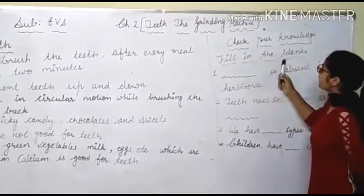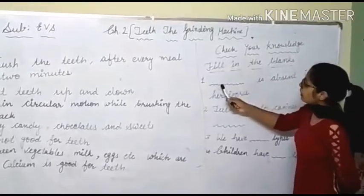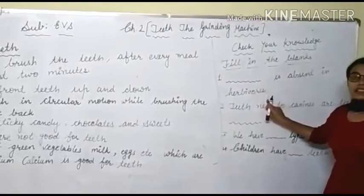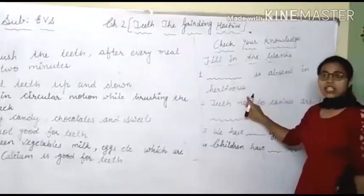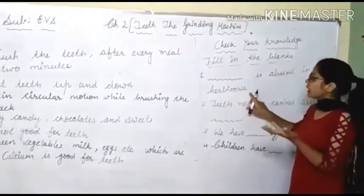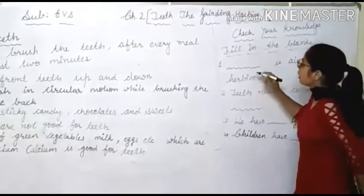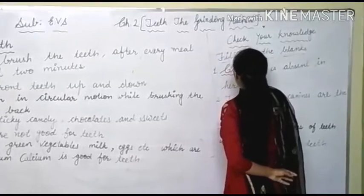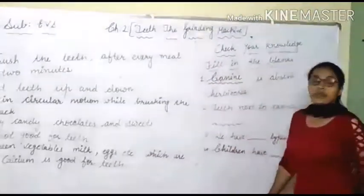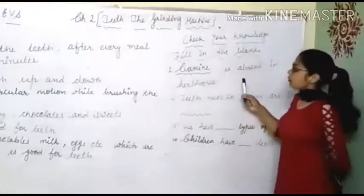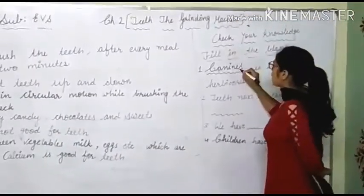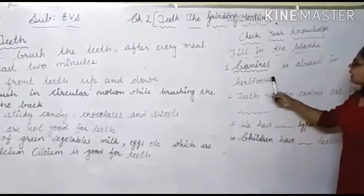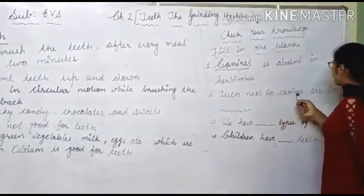The first fill-in-the-blank: dash teeth are absent in herbivores. Canines are absent in herbivores. Incisors, premolars, and molars are present in herbivores, but canines are not present in herbivores.